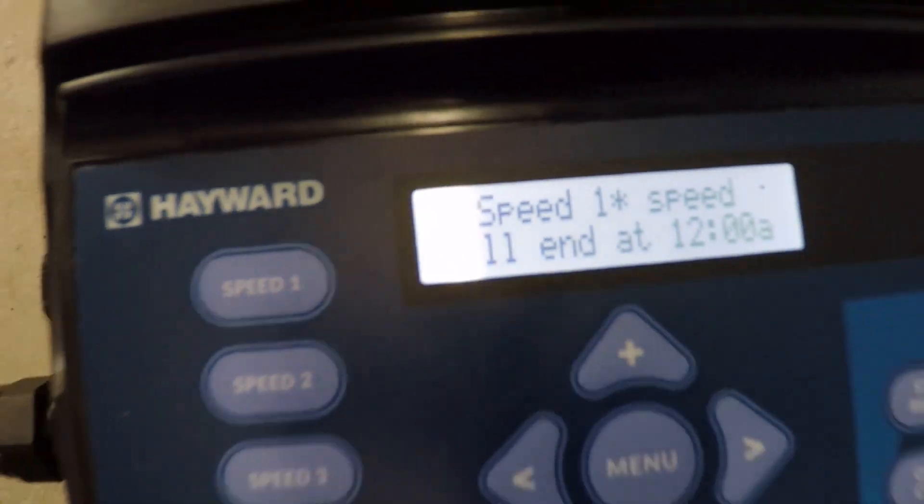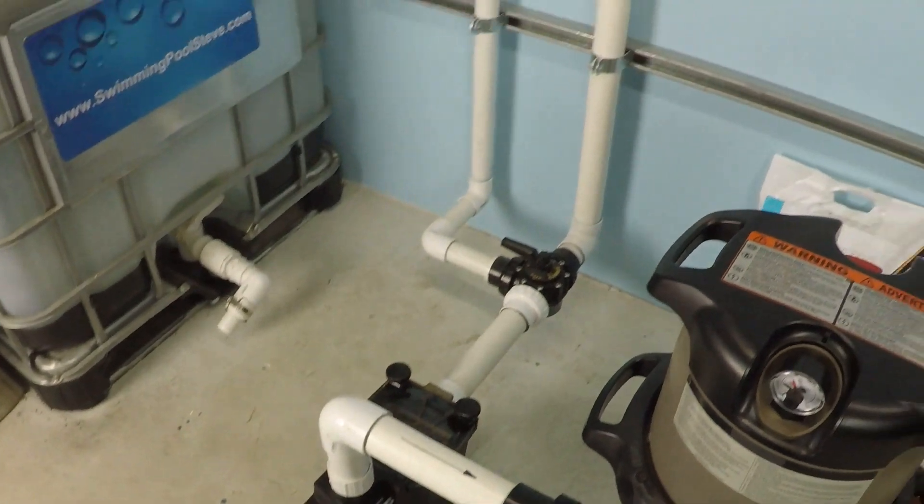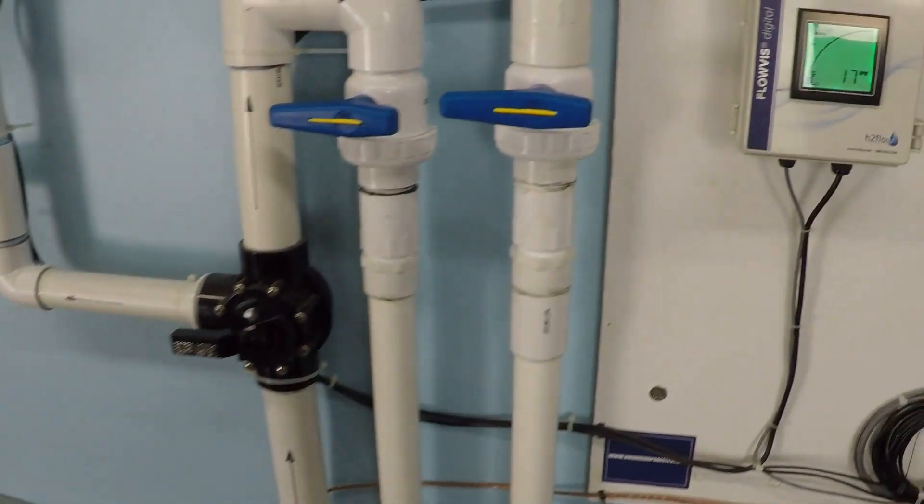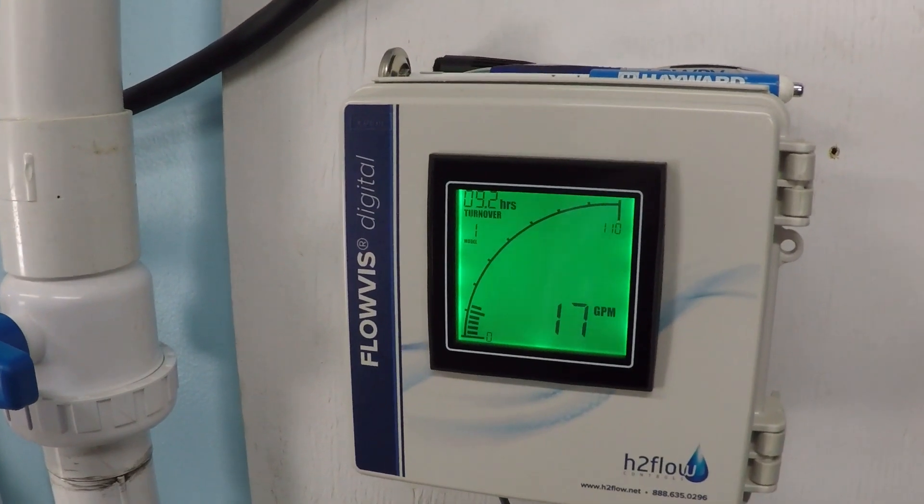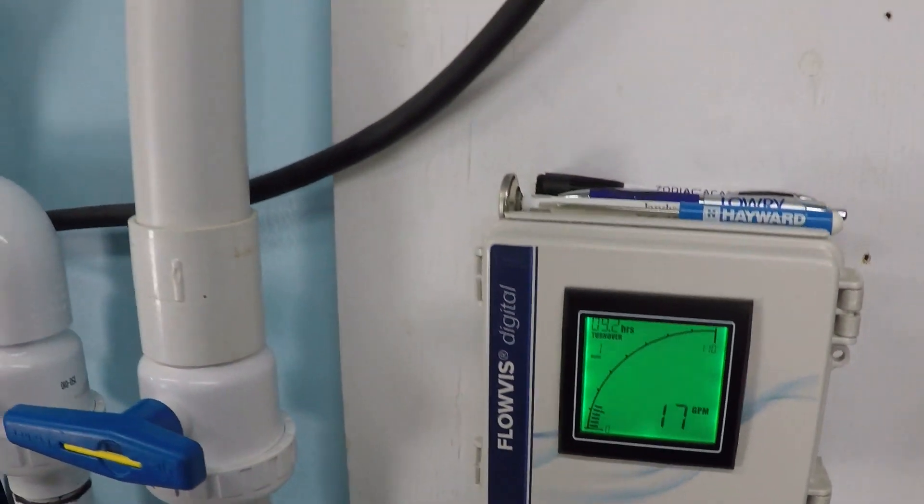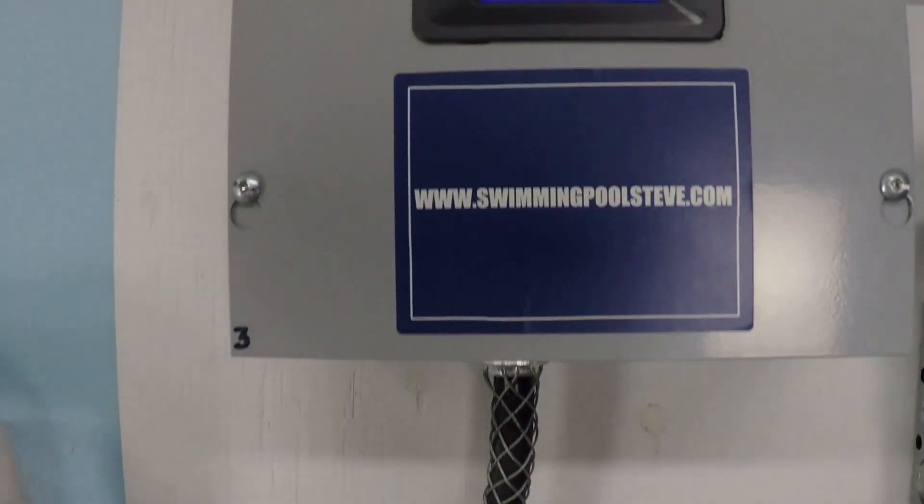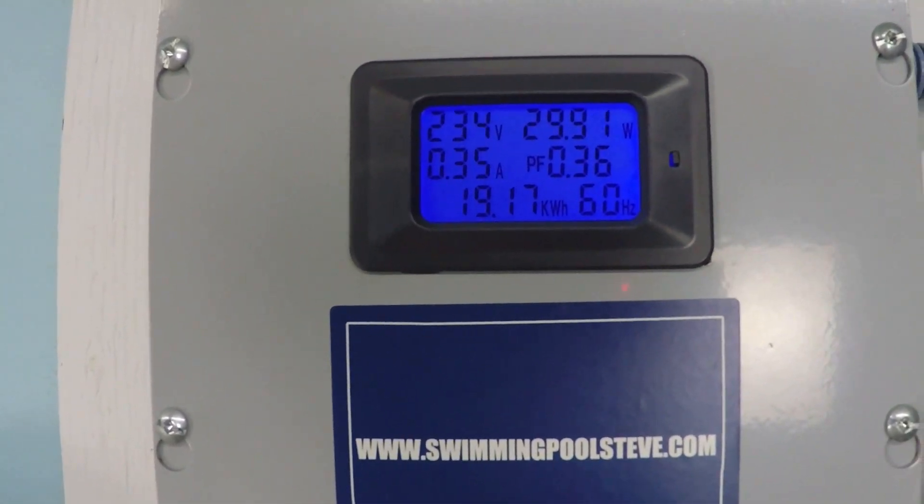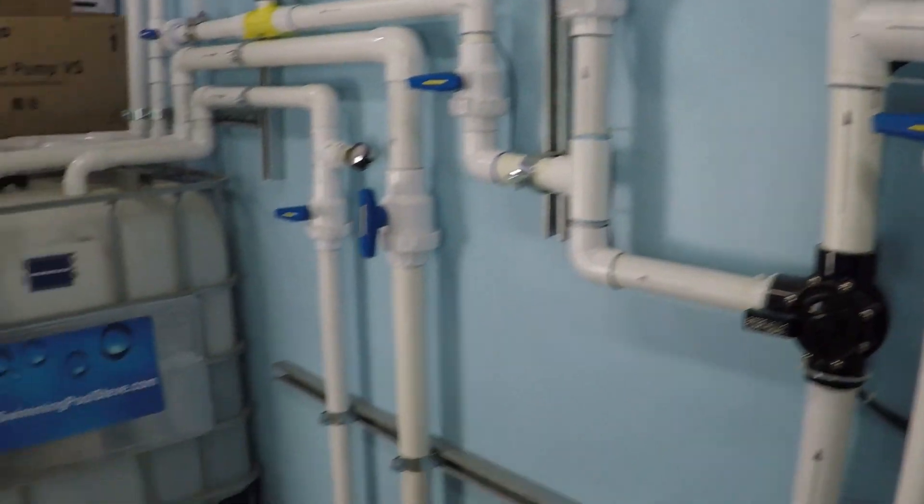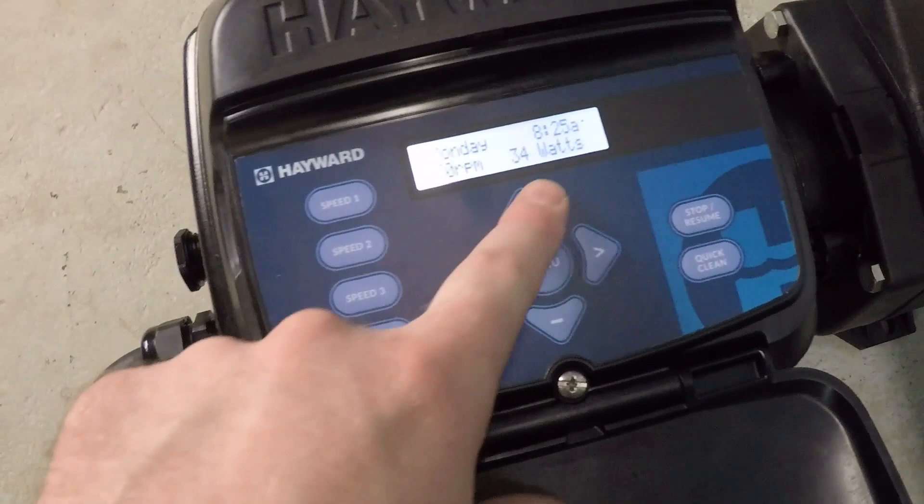A little bit hard to read that, it's easy to read in person, but I don't think it comes through too clearly on the camera. But already at 750 rpm, 17 gallons per minute, which is really crazy when you think about it. And it's super crazy when you look at this power consumption, 30 watts. It's an absolutely tiny amount of power consumption.